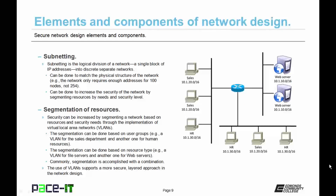Subnetting is the logical division of a network — a single block of IP addresses being divided into discrete separate networks. This can be done to match the physical structure of the network; for instance, if your network only requires enough addresses for 100 nodes, it doesn't need all 254 nodes of a Class C address. Subnetting can also be done to increase the security of the network by segmenting resources by need and security level.